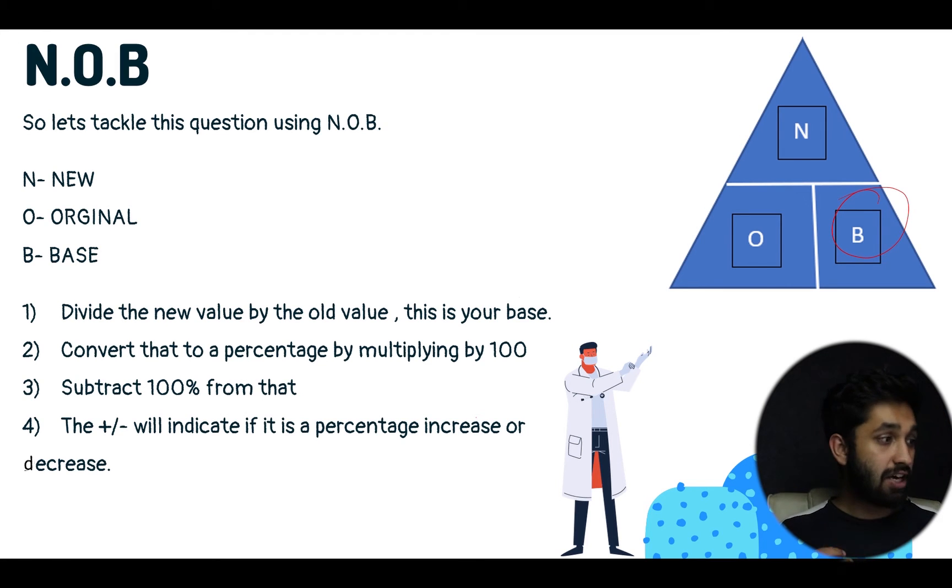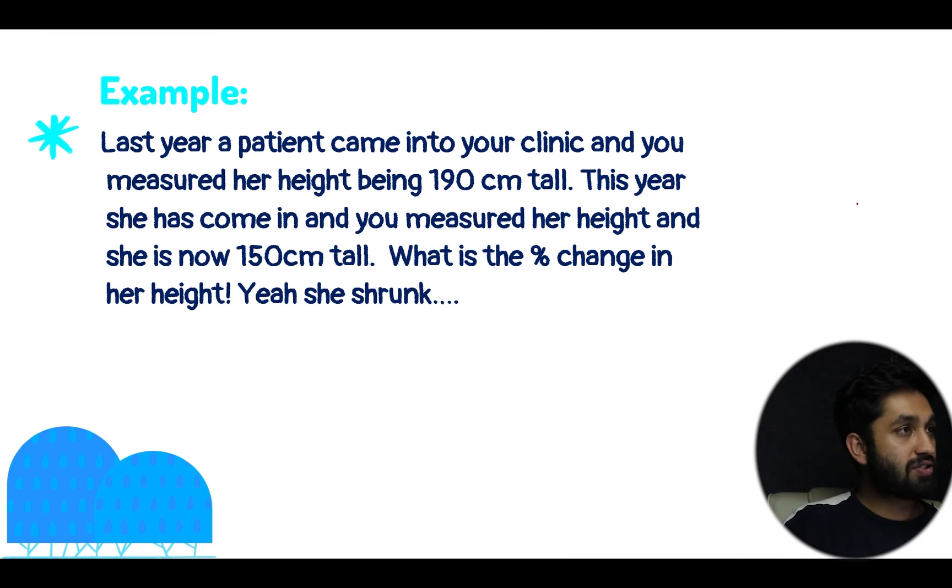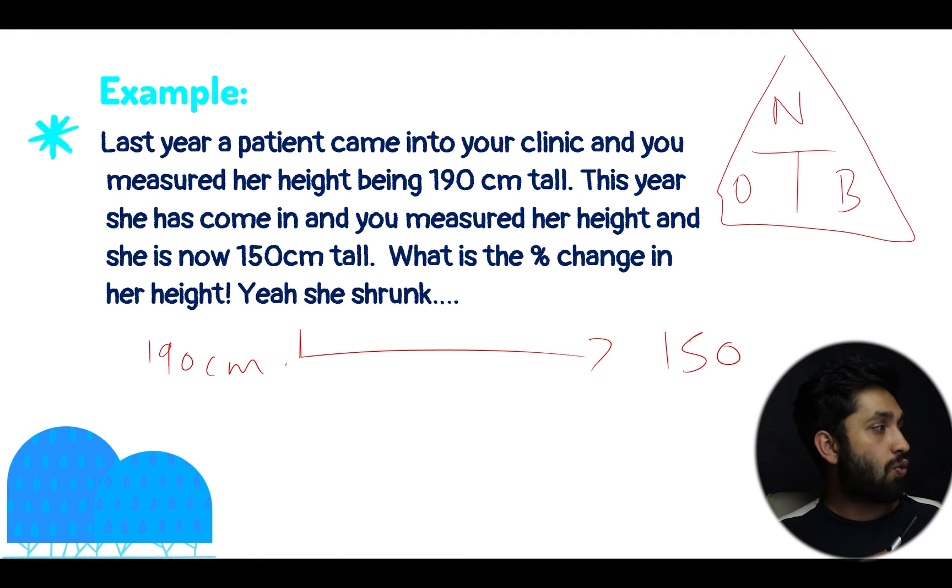So let's take a look at an example. Let's first draw out NOB. Okay, so last year a patient came into your clinic and you measured her height being 190 centimeters tall, very tall. This year she's come in and you measured her height and she is now 150 centimeters tall. What is the percentage change in height? So we've got our old and new height. Our old height is 190, our new height is 150, and according to this we do new divided by old, and that should give us our base value.